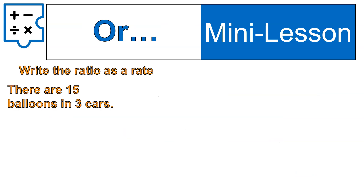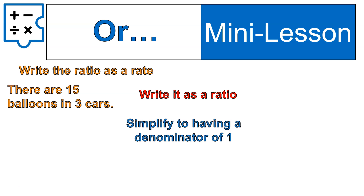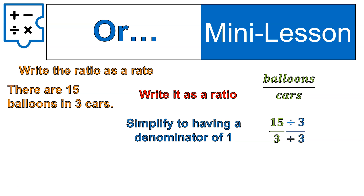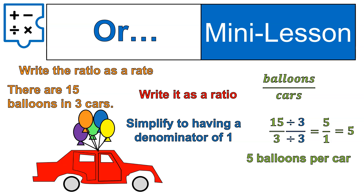Let's do another example. Write this one as a unit rate: there are 15 balloons in 3 cars. I'm going to set it up as a ratio and simplify it to having a denominator of 1. Balloons to cars is 15 over 3. If I simplify this down using the methods we've talked about, I would have 5 over 1, or 5 balloons per 1 car. I'm doing 15 divided by 3, so 5 balloons per car. There is my ratio set up: 15 to 3 is equal to 5 to 1.